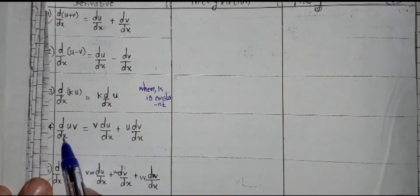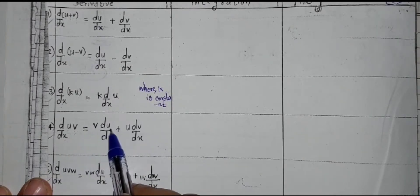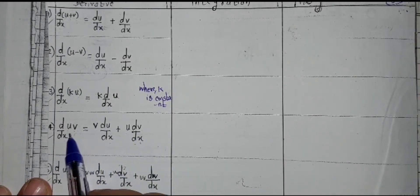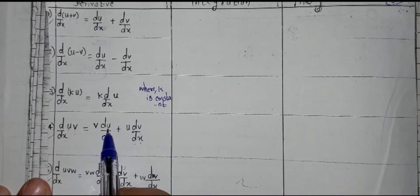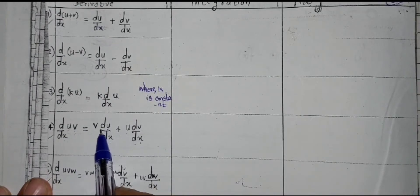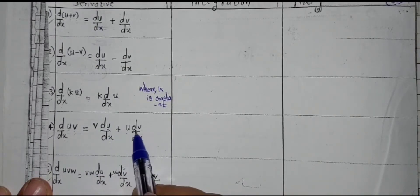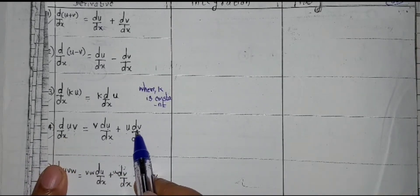Next, d by dx of uv is equal to v du upon dx plus u dv upon dx. To remember this: first take the derivative of the first function and keep the other outside, then in the next step take the derivative of the other one and keep the remaining part outside.